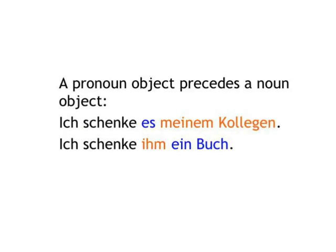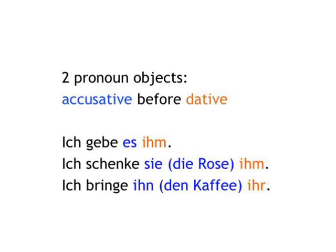If either the accusative or dative is represented by a pronoun, the pronoun comes first, as it refers to something already known. Remember the drumroll principle? New, therefore more important information generally comes later in a German sentence. So 'I give it to my colleague' — Ich schenke es meinem Kollegen. 'I give him a book' — Ich schenke ihm ein Buch. However, when two pronouns are involved, the accusative comes first, exactly as in English when you say 'I give it to him' — Ich gebe es ihm.